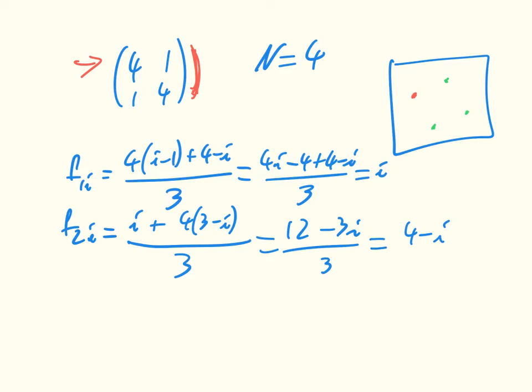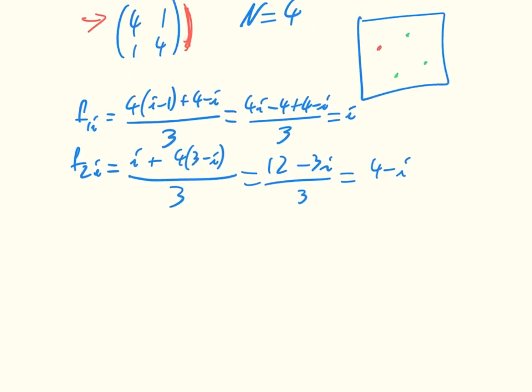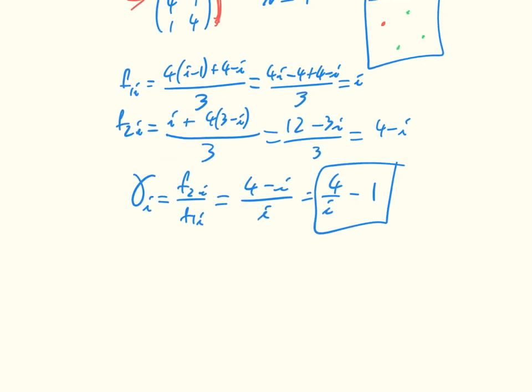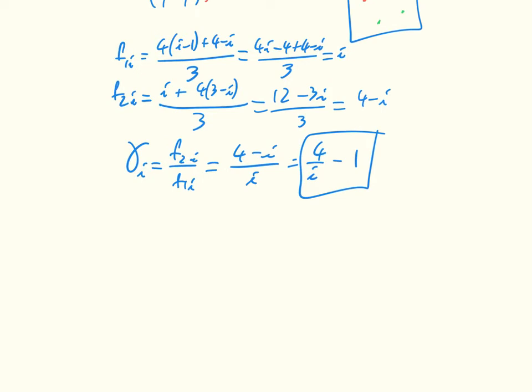And then once we've done that, we really need this gamma i, which is just the ratio of these two things. So it's f2i divided by f1i, which is equal to 4 minus i divided by i, which is equal to 4 over i minus 1. And so this is the thing we're going to need for our formula.